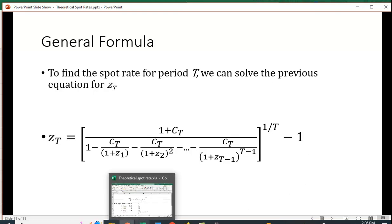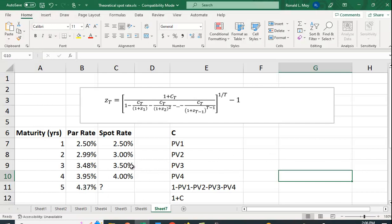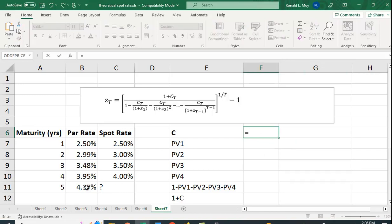Let's see if we can do this in Excel. I've got this same example here, and I find it's probably a lot easier to calculate the present value of each one of these cash flows, then take one minus that, and do the equation. For year five, the coupon is going to be 4.37% or 0.0437, 4.37 cents.